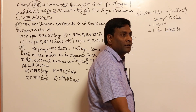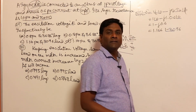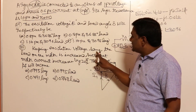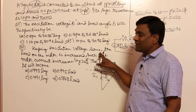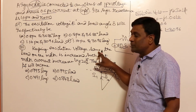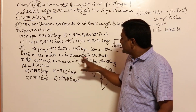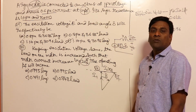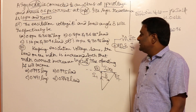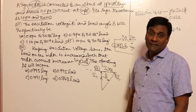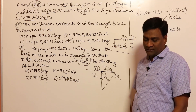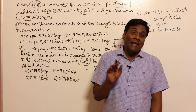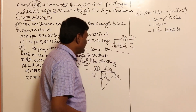Ideally in the question you need not solve this. Now let us see the second question. Keeping excitation voltage same — whatever we got in the first question — if we maintain EF same, the load on the motor is increased such that the motor current increases by 20%. The operating power factor will become — so EF is going to be same, and IA armature current should be increased by 20%.